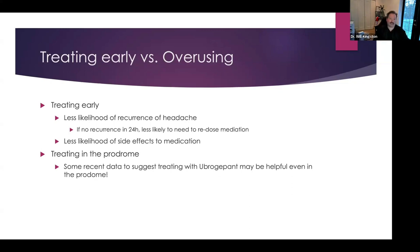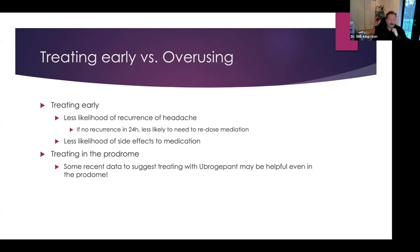There is some exciting evidence that some of our newer agents, specifically ubrogepant, might actually be helpful if people take it during their prodrome phase. So if someone can clearly identify that before every migraine they feel foggy, urinate more, yawn like crazy, and just don't feel like themselves, and they've been able to identify that this always happens before a migraine attack, it might be entirely appropriate to treat early with ubrogepant, which is the only one that has specific evidence for this indication. It may expand to further treatments down the road, but that still remains to be seen.